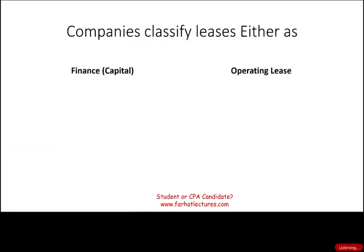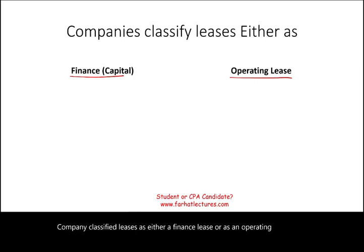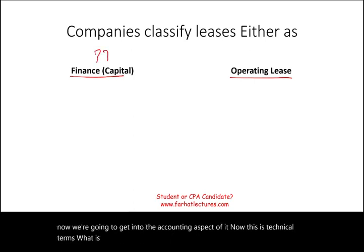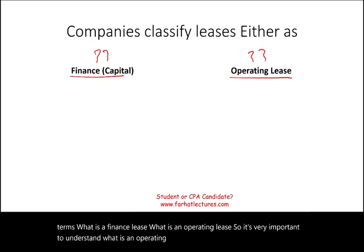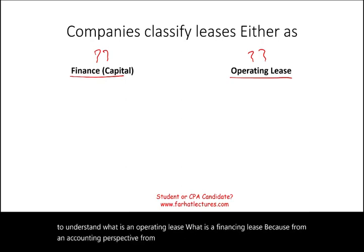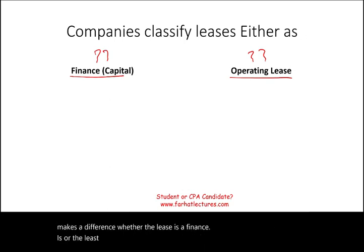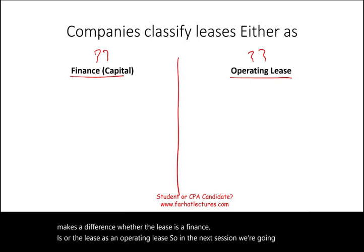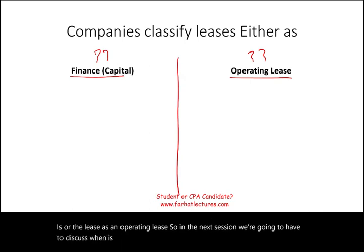Companies classify leases as either a finance lease or an operating lease, and now we're getting into the accounting aspect. What is a finance lease? What is an operating lease? It's very important to understand this because from an accounting and journal entry perspective, it makes a difference whether the lease is a finance lease or an operating lease. So in the next session, we'll discuss when a lease is classified as a capital or finance lease versus an operating lease.